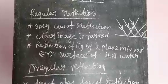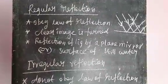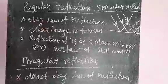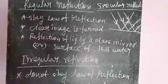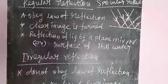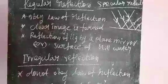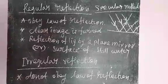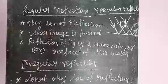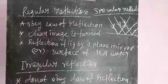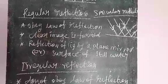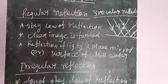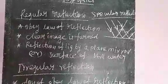Types of Reflection of Light: regular reflection and irregular reflection. Regular reflection, or specular reflection: when a beam of light falls on a smooth surface, it gets reflected and the reflected rays are parallel to each other. It obeys the law of reflection — angle of incidence equals angle of reflection — and produces a clear image. Example: reflection of light by a plane mirror or by the surface of still water produces a clear image. This type of reflection is called regular or specular reflection.